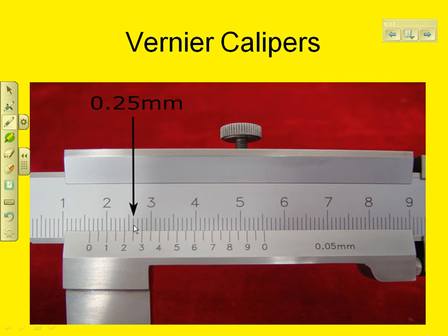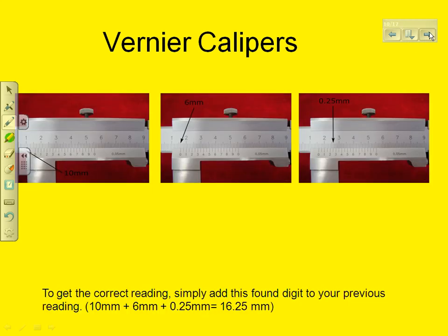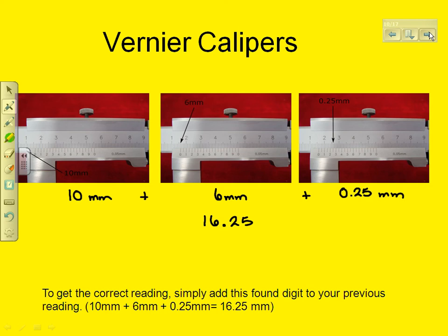Here's just their indication of 0.25. When we put it all together, we have the 10, we have the 6, and we have the 0.25 off the vernier scale. Add those all together and you get your measurement of 16.25. I usually just directly read 16 in that first step and then read the decimal value for my measurement. There are no other digits that you add when you use the vernier scale.